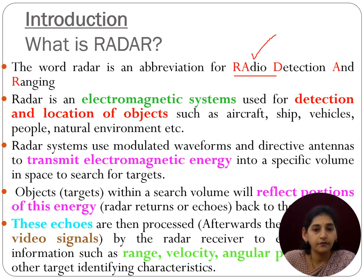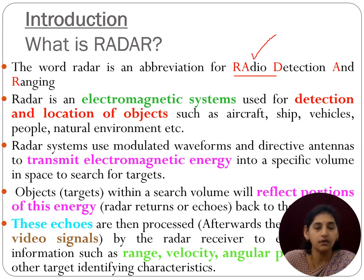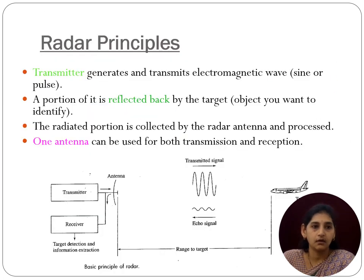After transmitting, the information comes back from the target to the radar receiver — it is a two-way process. Only when this two-way process is completed is the radar's work considered done. The properties we can extract include range, velocity, angular position, and distance.